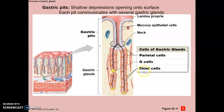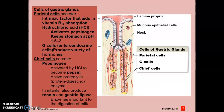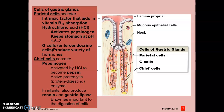Gastric pits are shallow depressions opening onto the surface, and each pit communicates with several gastric glands. The parietal cells secrete intrinsic factor, which is necessary for the absorption of vitamin B12. They also secrete hydrochloric acid, which keeps the stomach at a very low pH of about 1.5 to 2, and activates the pepsinogen produced by the chief cells. The G cells produce a variety of hormones.